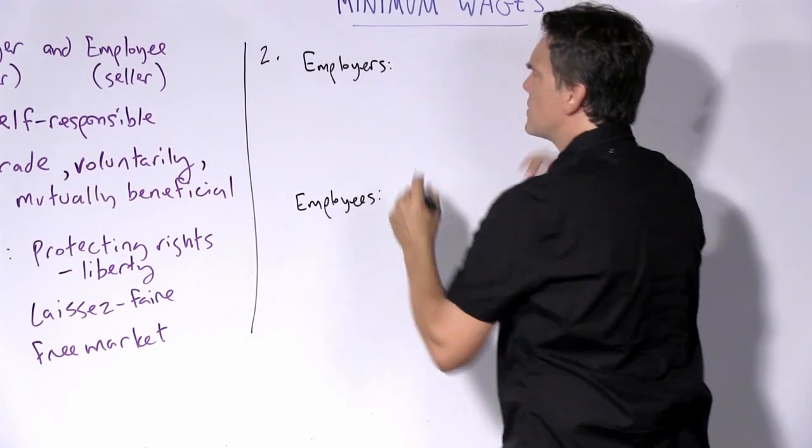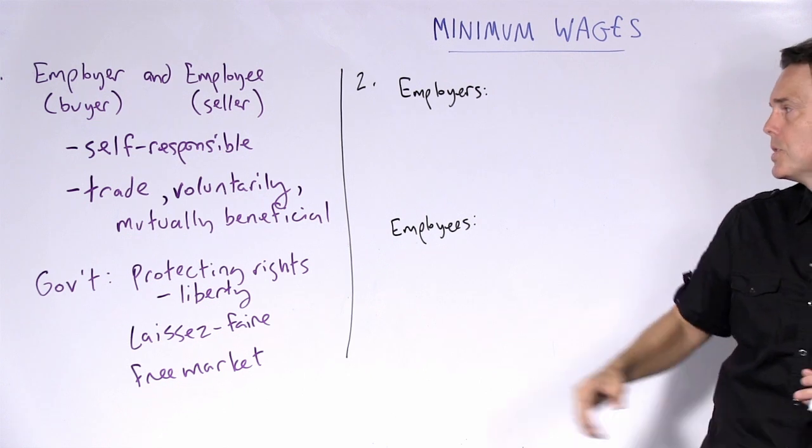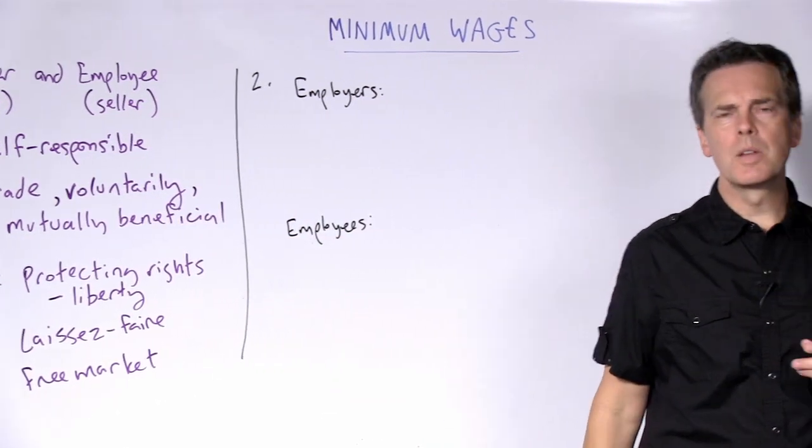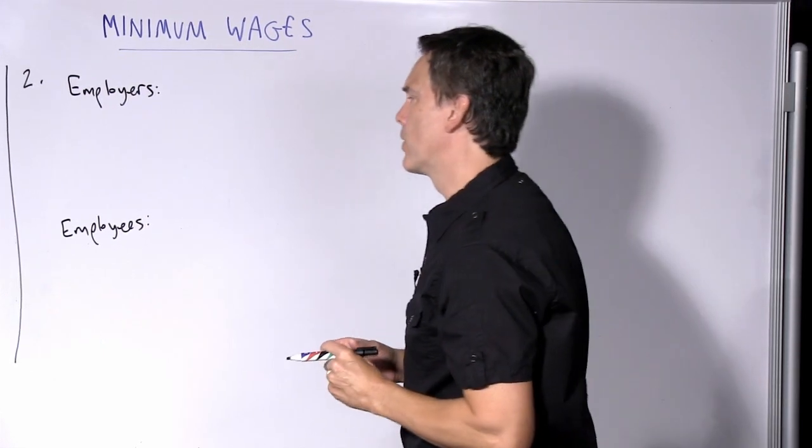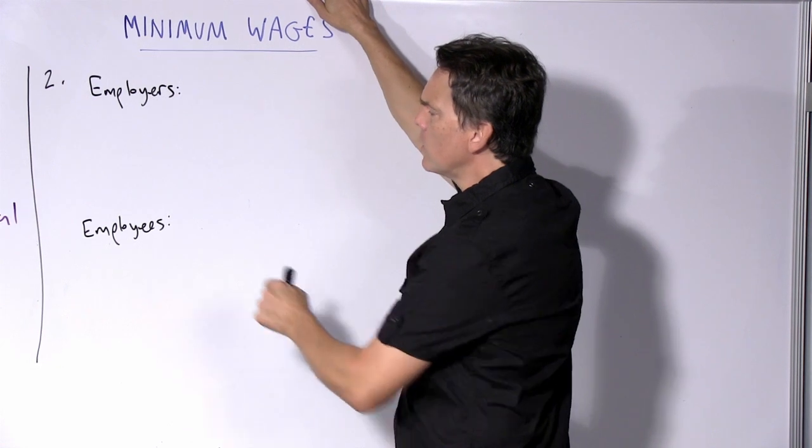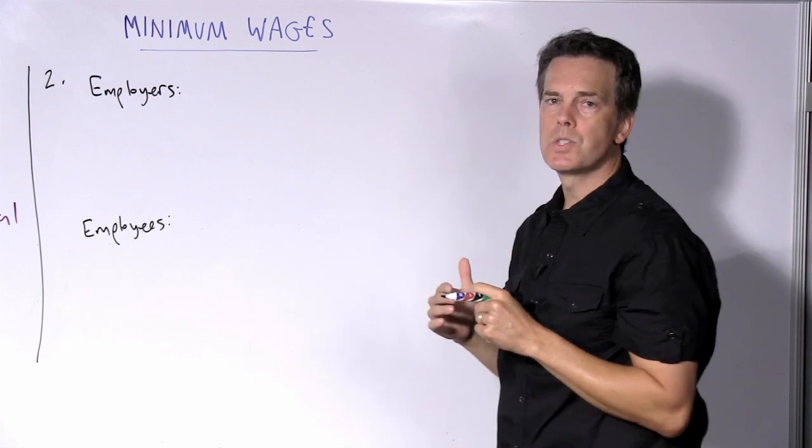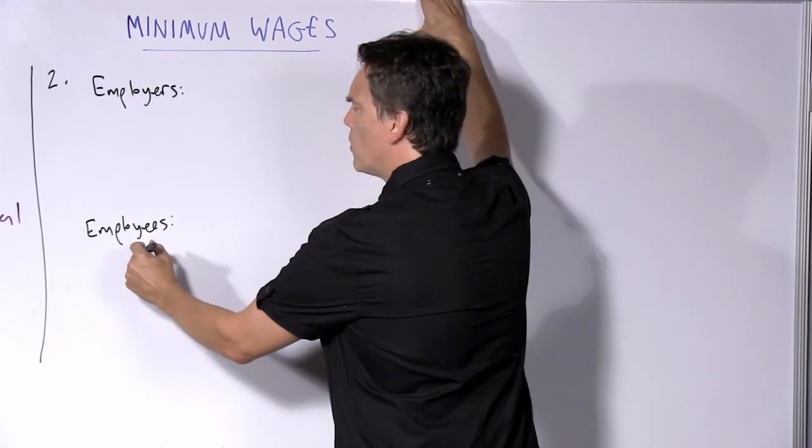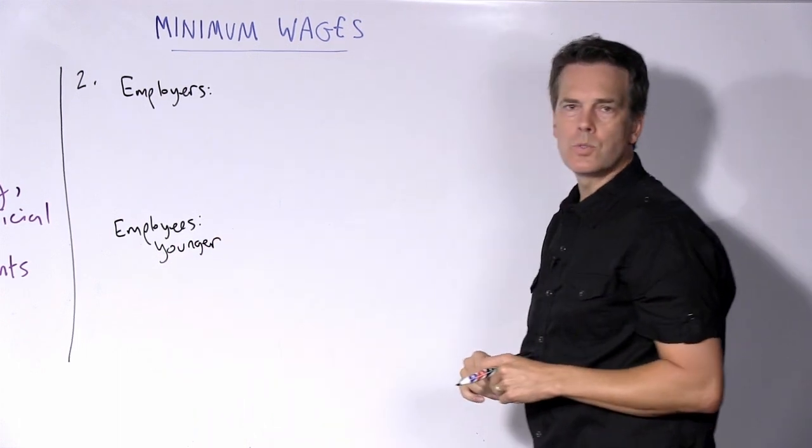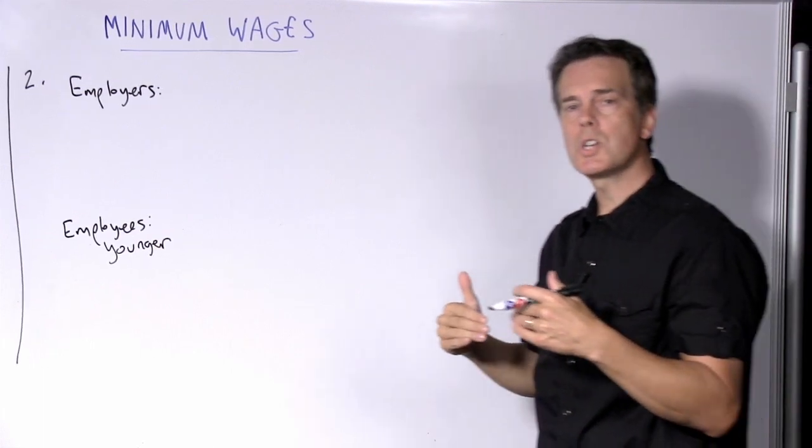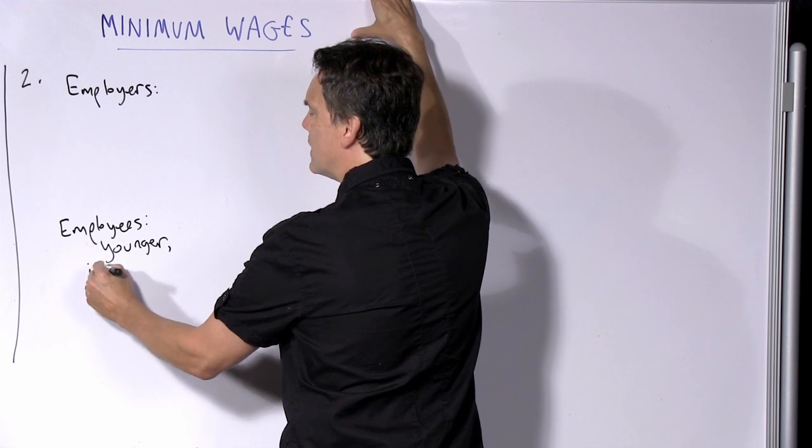What this position will say is that treating all parties as equally self-responsible agents who can negotiate to mutually beneficial terms in a free market is unrealistic about the economic and business facts on the ground. Instead, if we look at the typical employees, particularly the kinds of employees that minimum wages are designed to help and protect, typically what we are talking about here are people who are younger. Maybe they are high school dropouts or maybe there are people for whatever reason who are just entering into the labor market. And so these people are typically inexperienced.